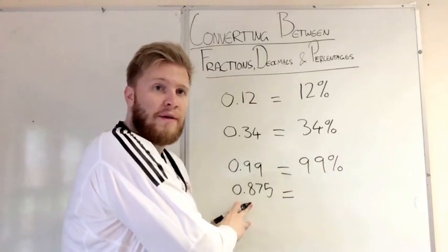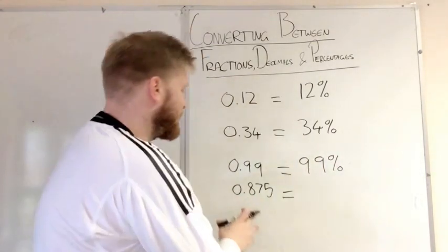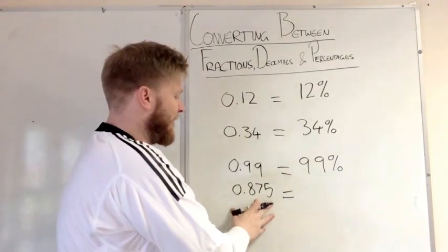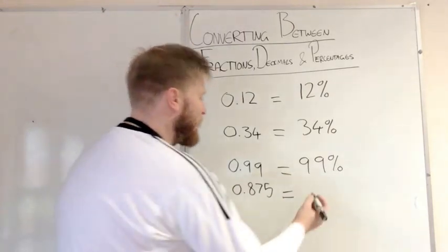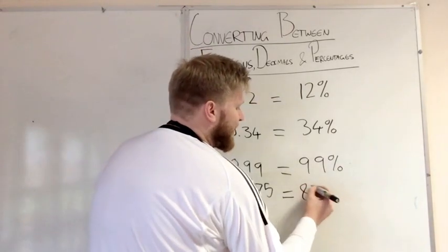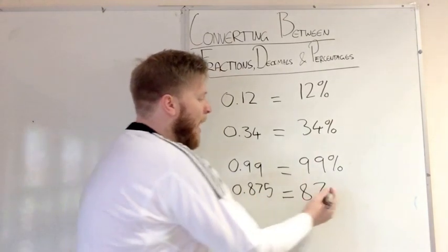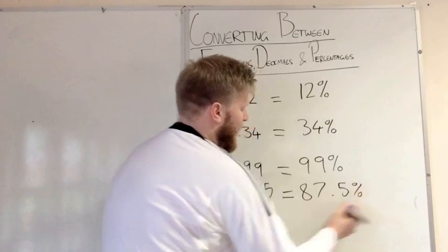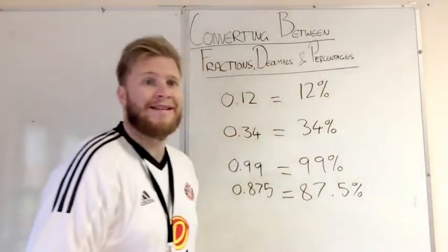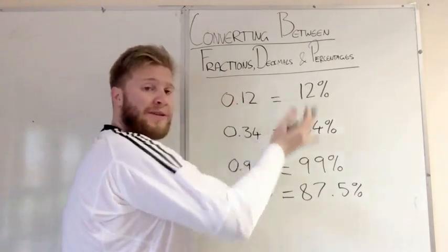Now I've got an answer from one of the previous questions there we had, and it was 0.875. Now this one's a bit different because it's got an extra decimal place there, it's got thousands. But this is done exactly the same way. That would equal 87, because we've got 8 and the 7 in the tenths and the hundredths place, but we would have 0.5%. And that decimal kept going on, it would just be more decimal places in the percentage.